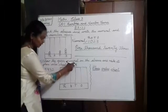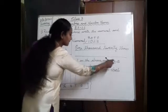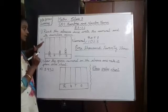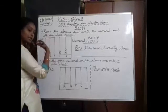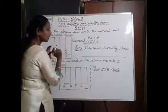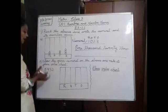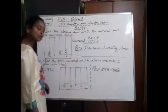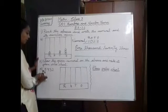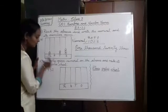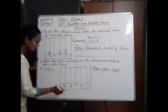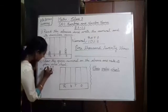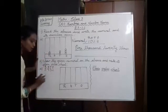Question number 2: Show the given numeral on the Abacus and make its place value chart. In the previous question, the Abacus was given and we wrote the numeral and number name. In this question, they have given the number and we have to draw the Abacus and place value chart. The number is 5,932. Before placing it on the Abacus, write ones, tens, hundreds, thousands so you will not get confused.